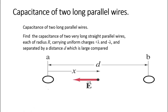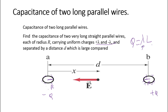In this example, we are going to calculate the capacitance of two long parallel wires. These two wires have the same size — the same length and the same radius — and they are conducting materials. The charge will be plus Q on one wire and minus Q on the other. The charge is lambda times the length of the wire, and lambda is the charge density, which is uniform.